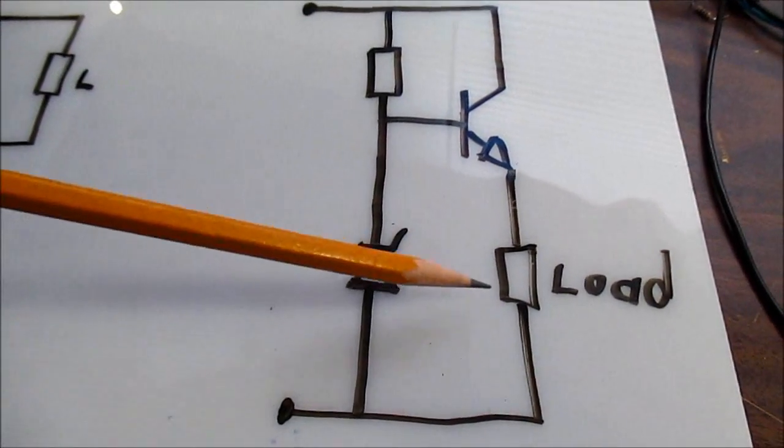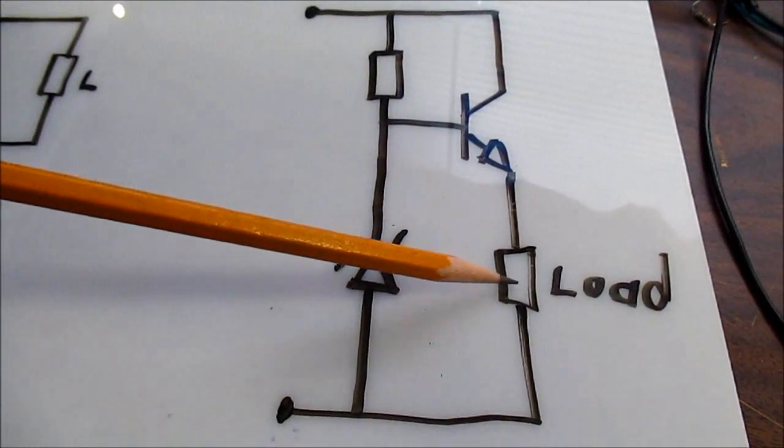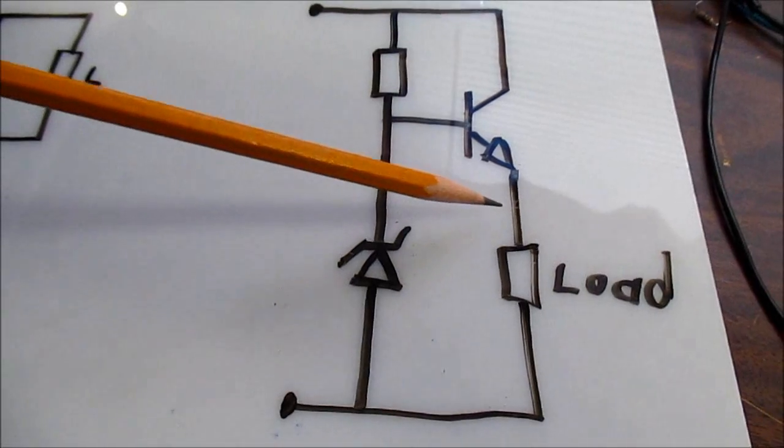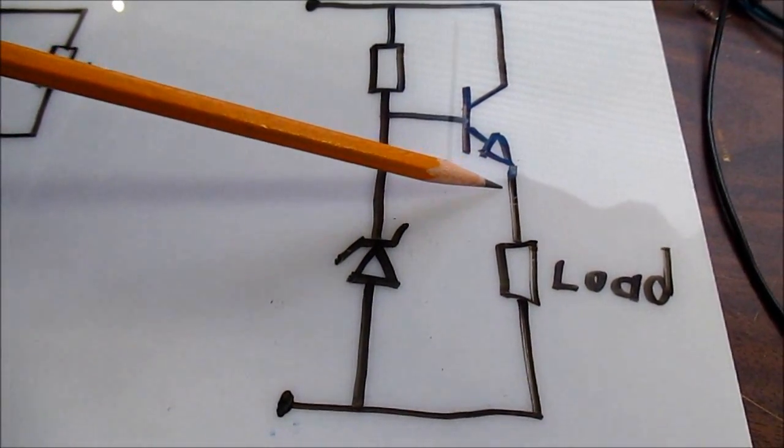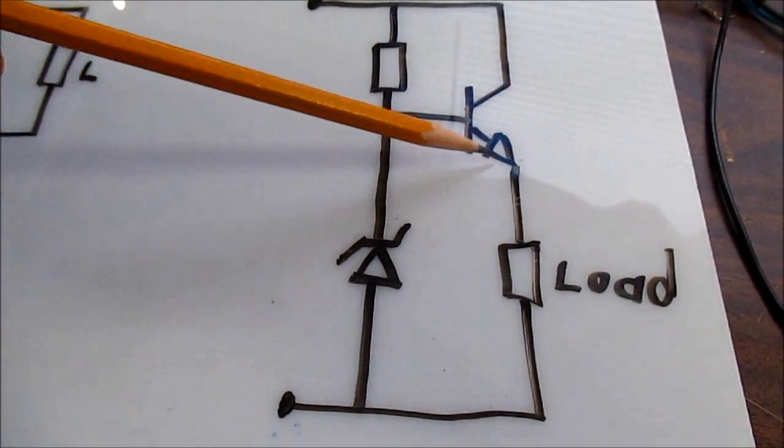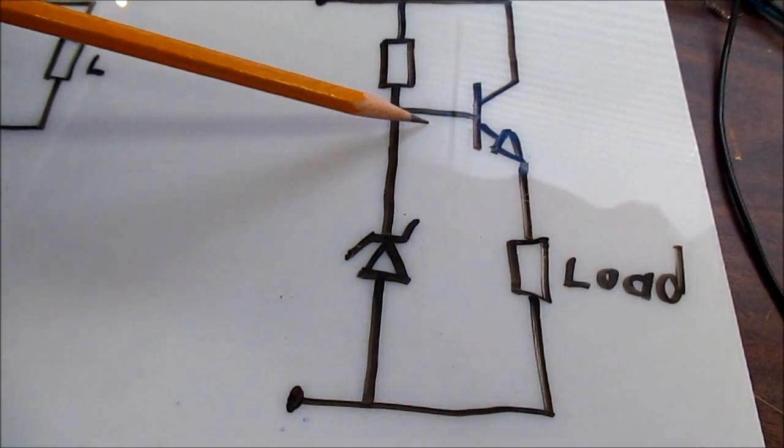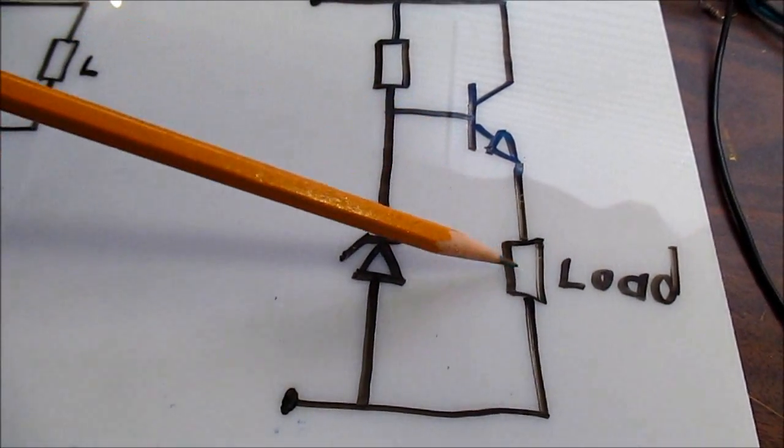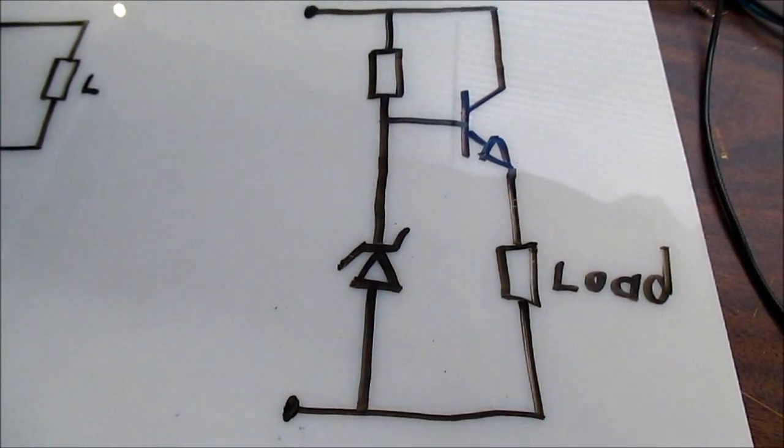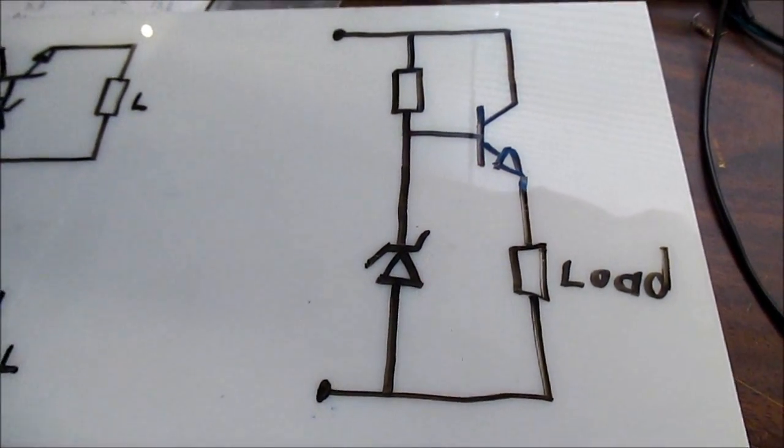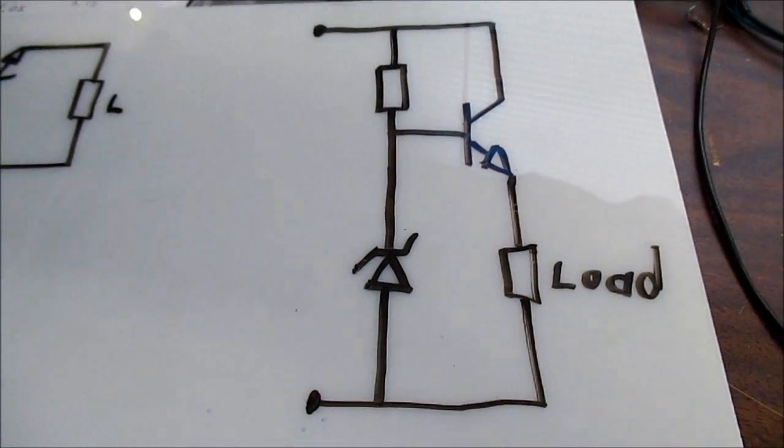And conversely, if the load draws less, then the voltage is going to want to go higher. But when it goes higher, the transistor draws less current through the base. And it counteracts that as well. So pretty neat how that works with negative feedback.